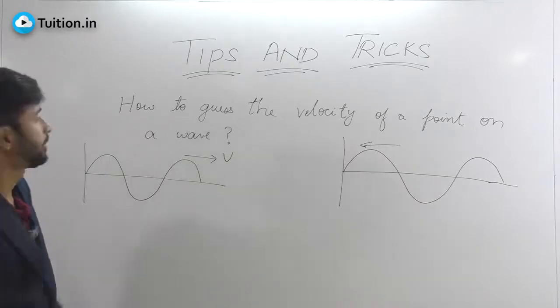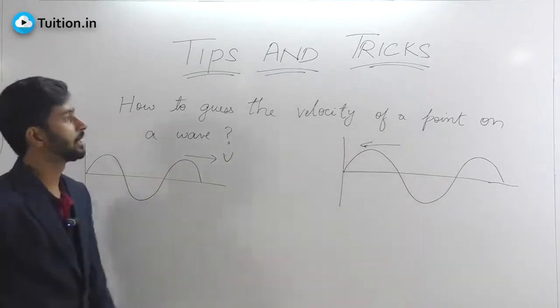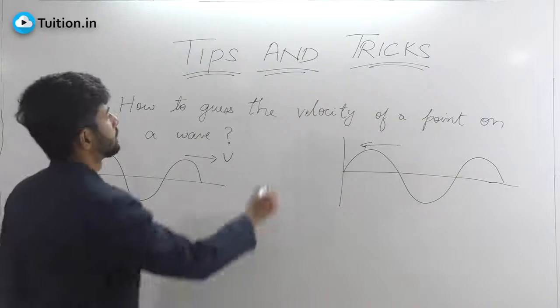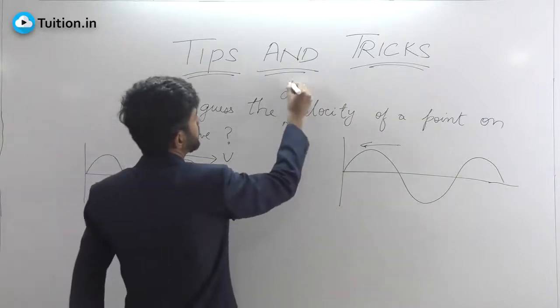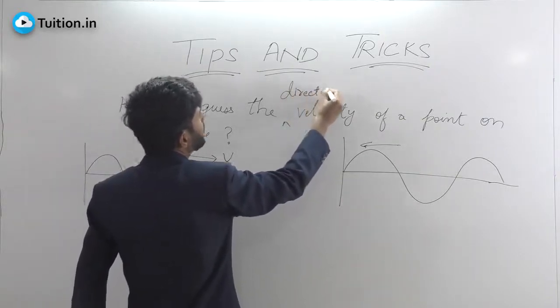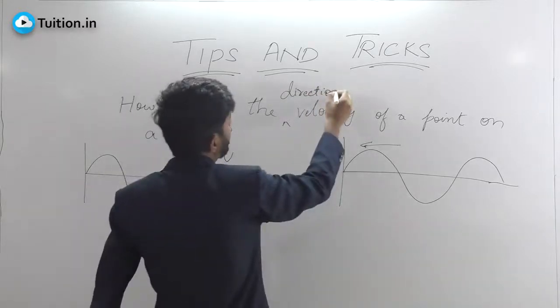Let us discuss a very useful trick to find the direction of velocity of a point on a wave. In fact, let me just modify this: this is nothing but that direction. This cannot give you the magnitude, but it can tell you whether the point is moving up or down.